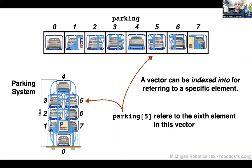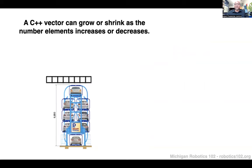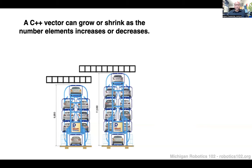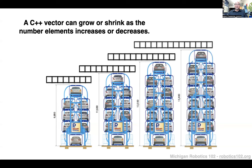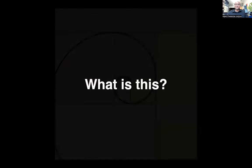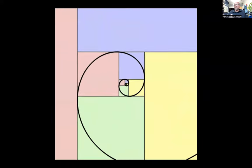C++ vectors can grow and shrink as the number of elements increases or decreases. If we extended the parking structure to accommodate more cars, we can similarly grow our C++ vector, all the way to whatever number of cars we'd like to store. We can also shrink it if we remove spaces from the smart parking structure. This gives some insight into what a vector representation looks like in C++.